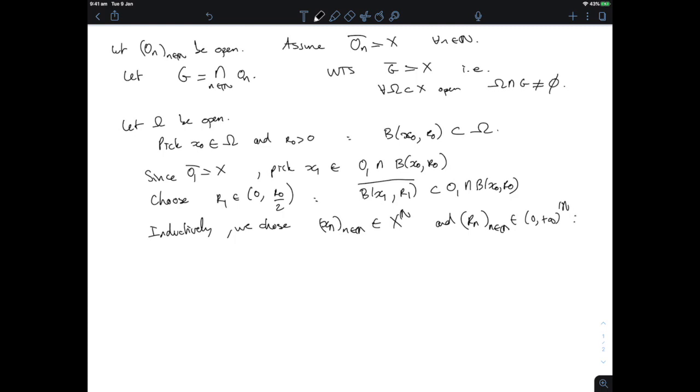Such that the ball at xₙ of radius rₙ is always included in Oₙ intersected with the ball that we had defined just previously, B(xₙ₋₁, rₙ₋₁), for all n. And in the meantime I'm going to choose rₙ such that rₙ is smaller than rₙ₋₁/2, just repeating the above procedure.